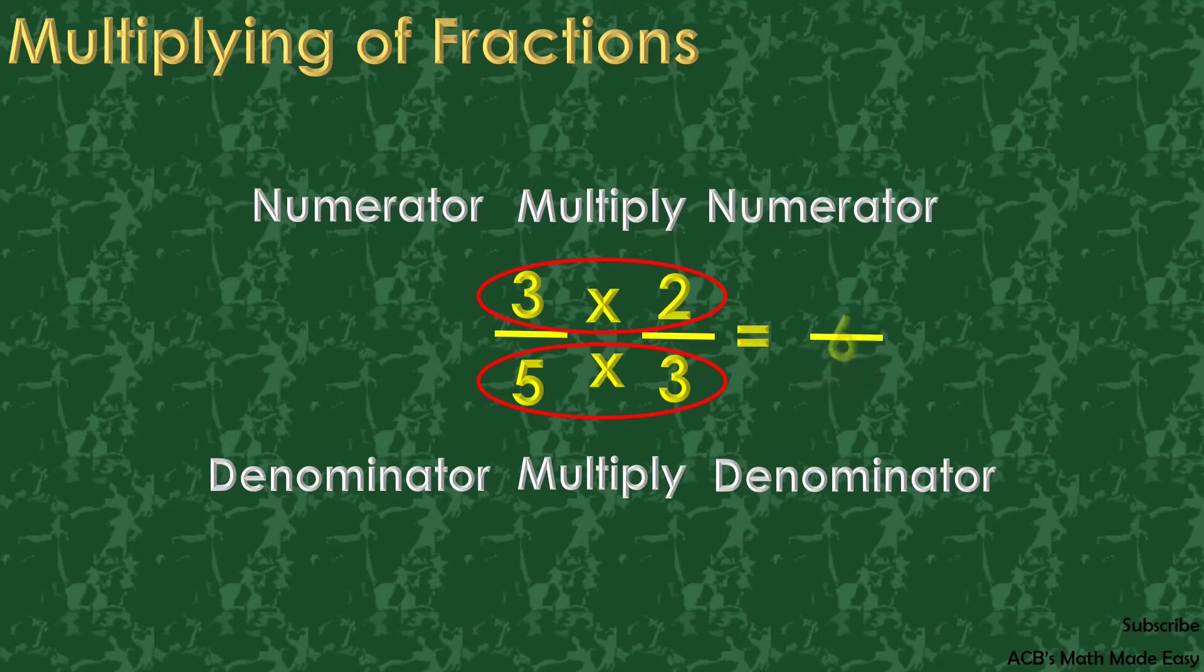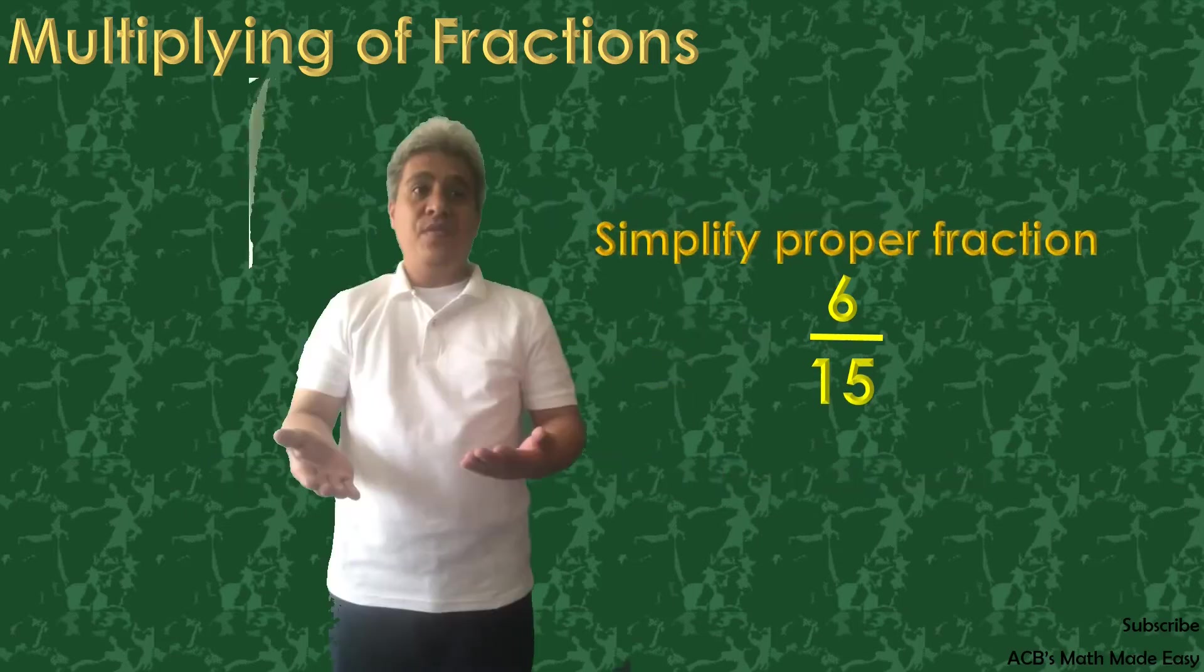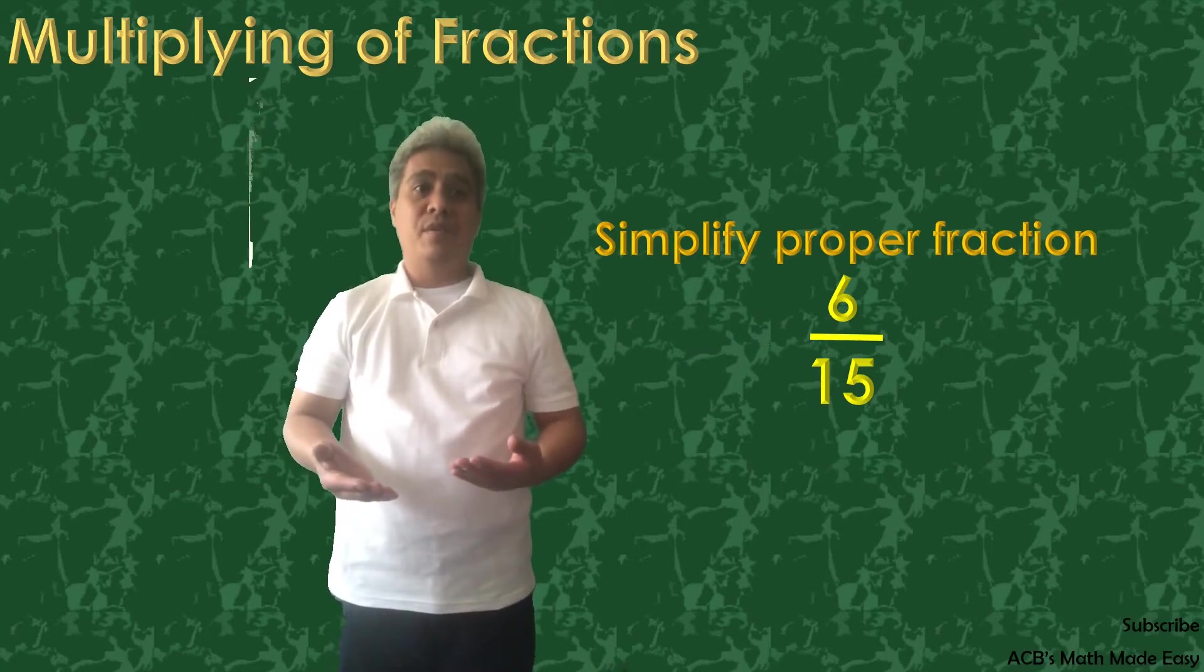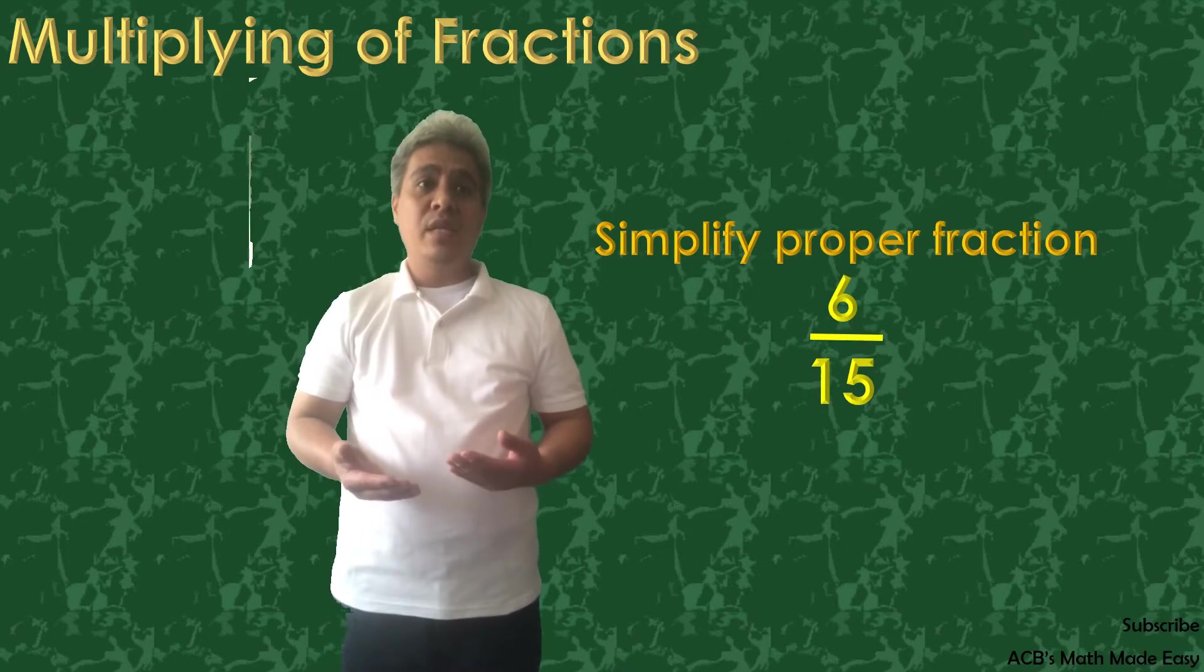3 times 2 equals 6 and 5 times 3 equals 15. 6 and 15 are both composite numbers and have a common factor, so it means that we need to simplify it.